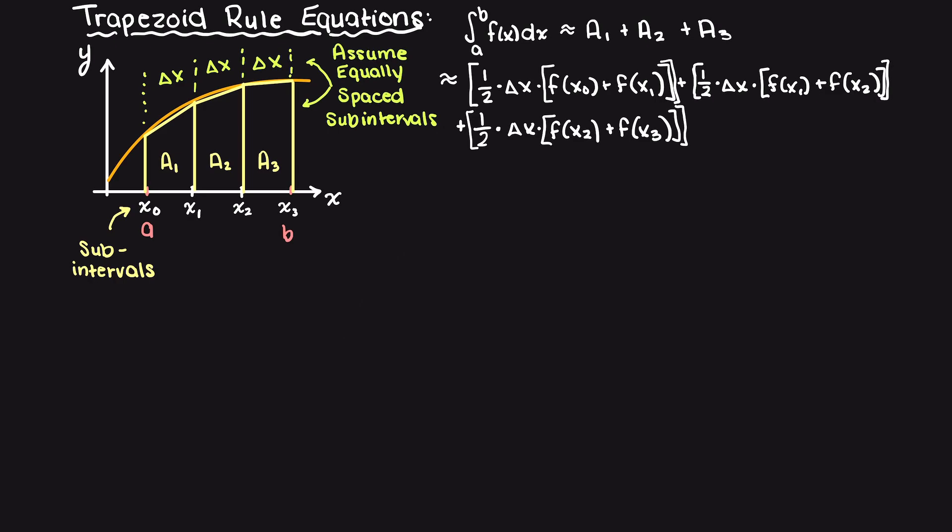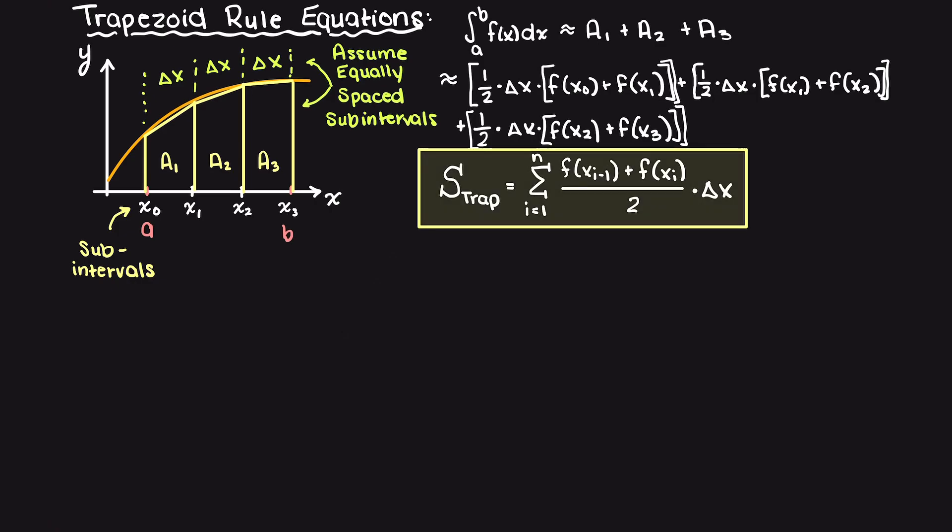To put this into summation notation, the trapezoid rule looks like this. You could also move the ½ outside of the summation term, or if you have equal spacing the delta x and ½ can both be moved outside the summation term, however this notation is more general.